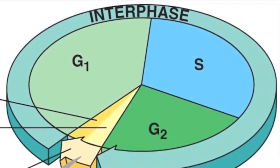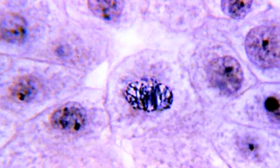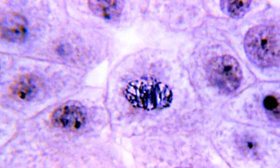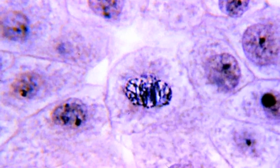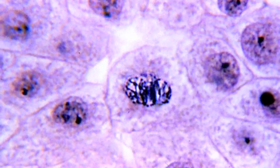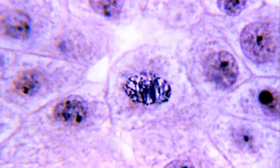In G1, the decision to begin cell division is made. In S or DNA synthesis, chromatin is replicated. Finally, in G2, the centrosomes have replicated, each including two centrioles, and the cell is ready for mitosis.